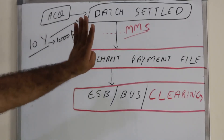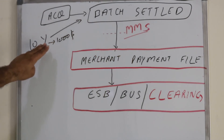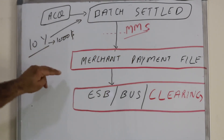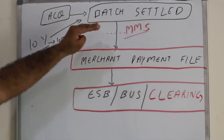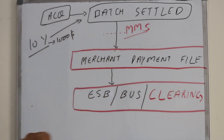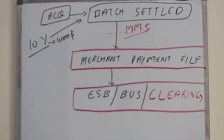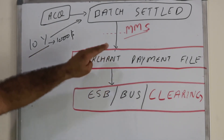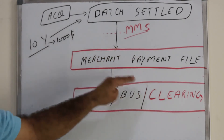The batch has been settled. With 10 transactions flagged Y and $1,000, the acquiring bank will post these transactions to their merchant management system and generate an outgoing file called the merchant payment file. This name is used for easy reference; an acquiring bank can use a different name per their business requirements.